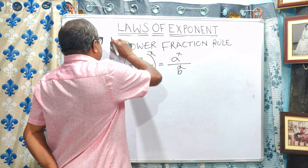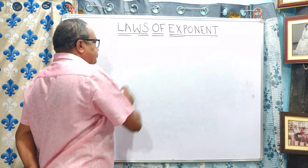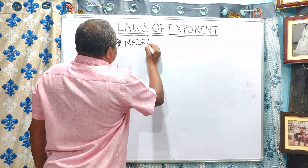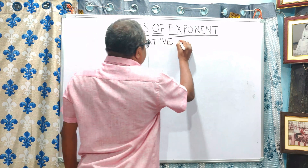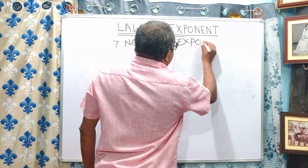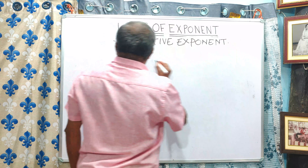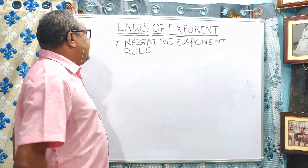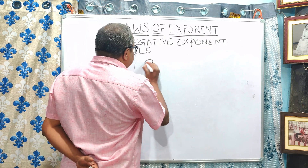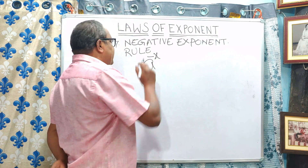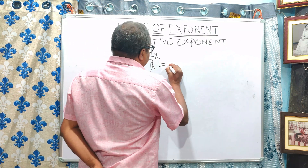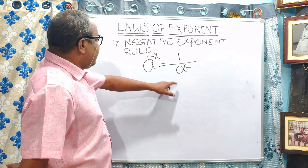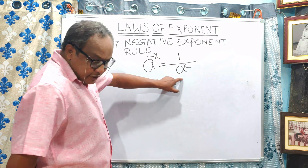The next rule is the negative exponent rule. If an exponent is negative, what should be the result? Let us consider A to the power minus x. To convert minus x to positive, we write it as one divided by A to the power x. That is, A to the power minus x equals 1 over A to the power x.